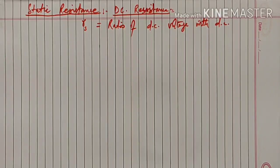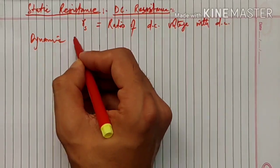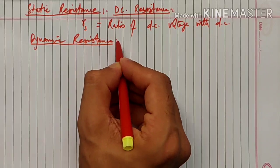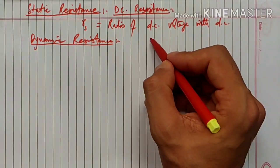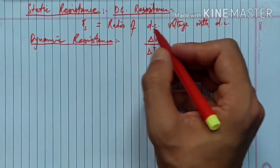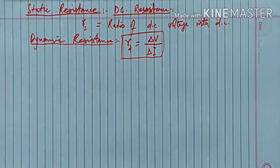दूसरी resistance होती है diode की that is called as dynamic resistance. Dynamic resistance को हम define करते हैं as ratio of small change in voltage, that is delta V, with small change in current, that is delta I. This is called as Rd - dynamic resistance. Dynamic resistance of diode can be defined as ratio of small change in voltage with small change in current.